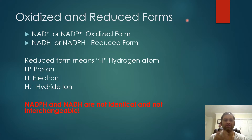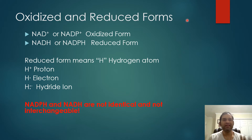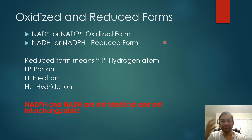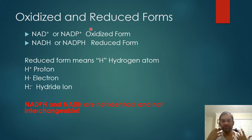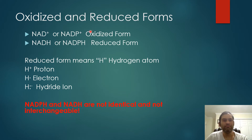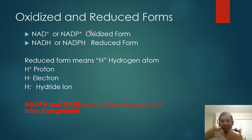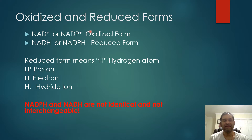First and foremost, one of the most common mistakes that I see students make in Biochemistry I is conflating and confusing this idea of oxidation and reduction. These two cofactors switch between an oxidized form, which is the form that would usually have a plus charge assigned to it. So NAD+ or NADP+ is oxidized. Any reaction in which it reduces something by transferring hydrogen, in turn, these two cofactors will get oxidized.